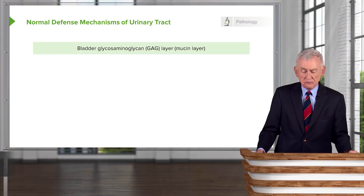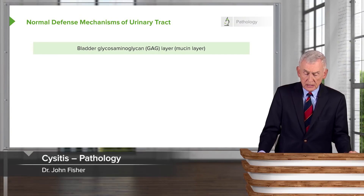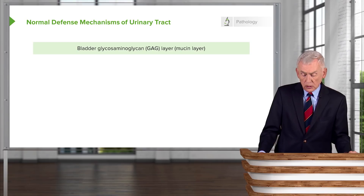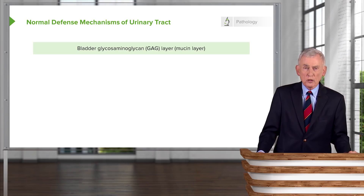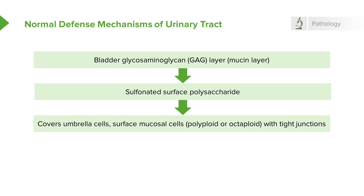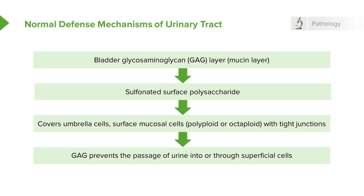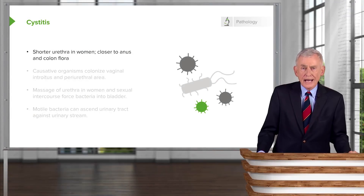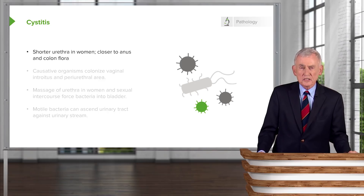The urinary tract has additional defenses against pathogens. It has glycosaminoglycans — the GAG layer — in the normal mucus of the urinary tract. This is a sulfonated surface polysaccharide that covers the umbrella cells and surface mucosal cells, which are polyploid or octoploid with tight junctions. This glycosaminoglycan prevents the passage of urine into or through superficial cells.